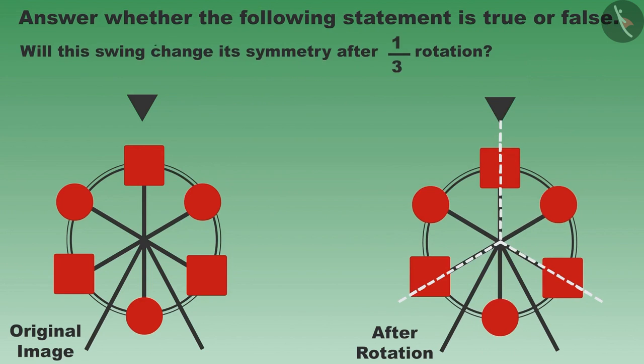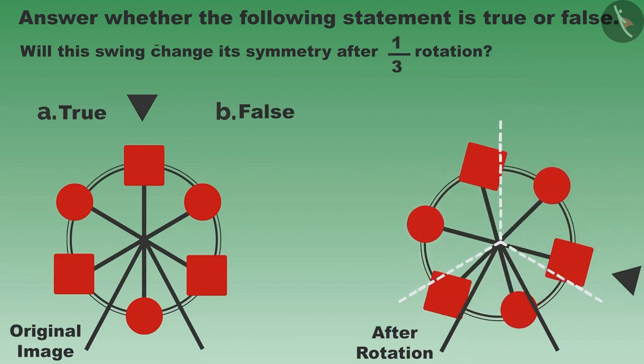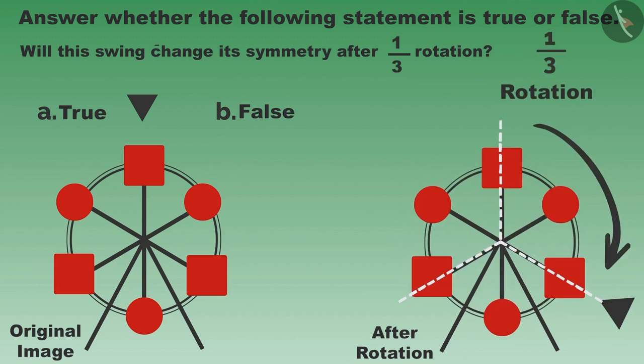Children, will the symmetry change after one-third rotation? Let us rotate it and see. As you can see, it remains the same even after one-third rotation. Children, it is not necessary that the objects with one-third rotational symmetry will remain the same after one-sixth rotation.